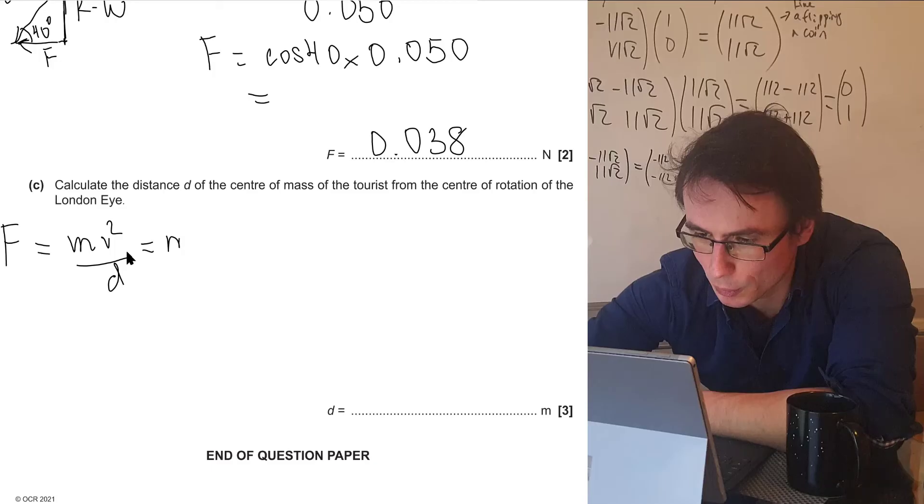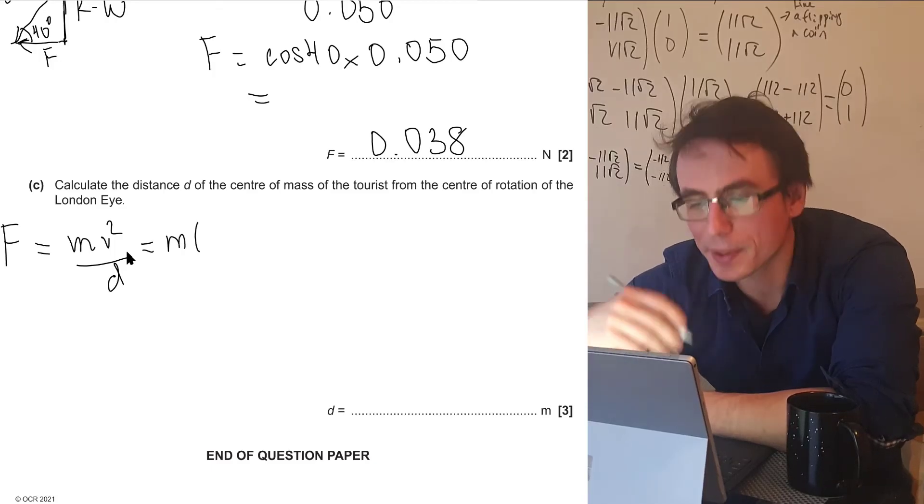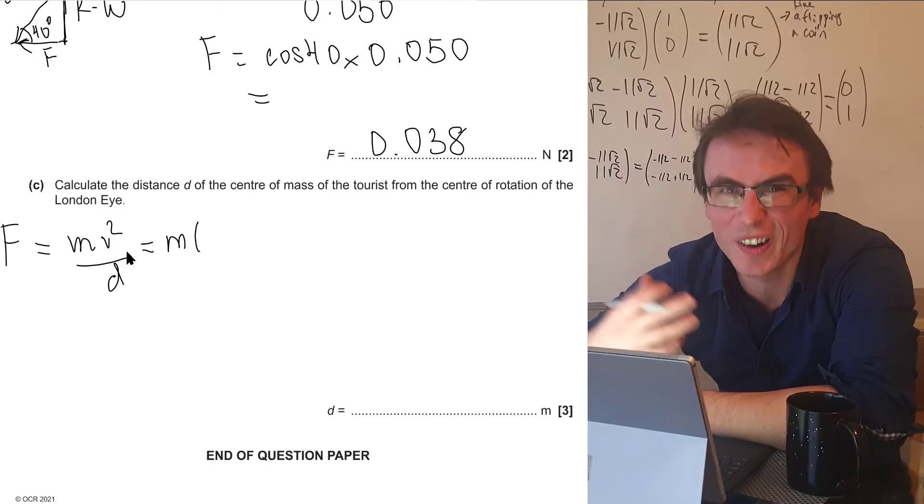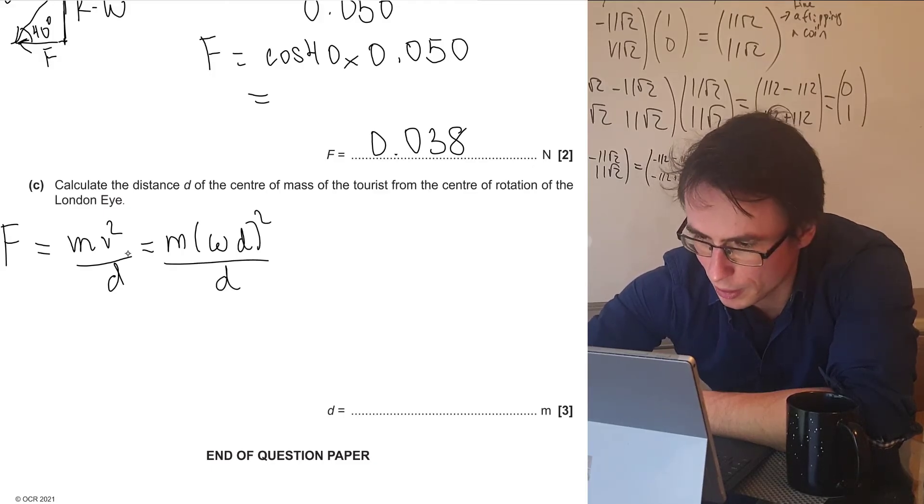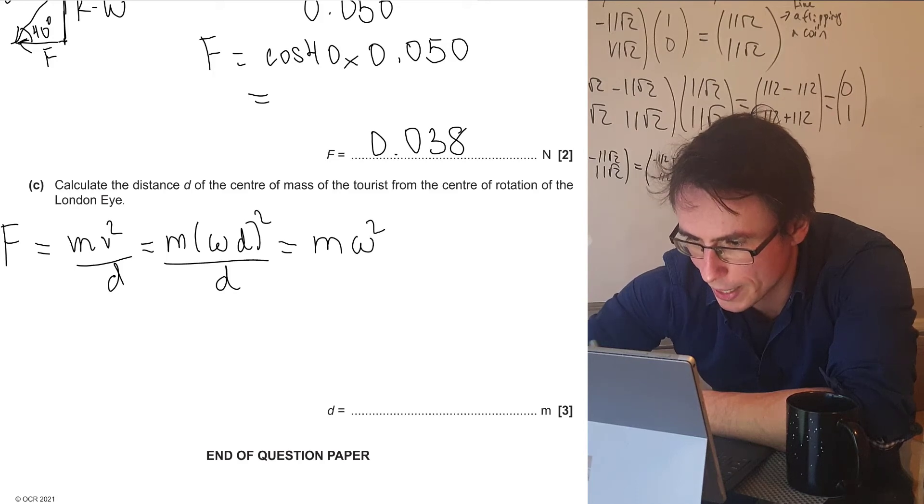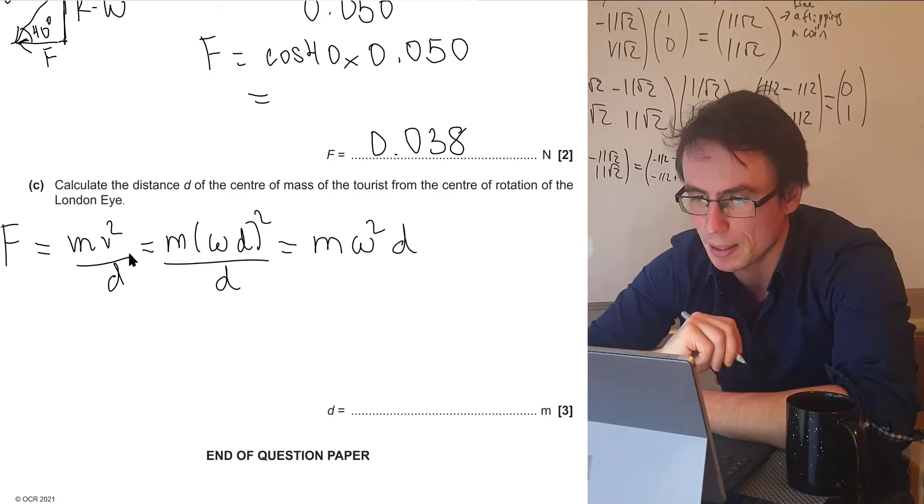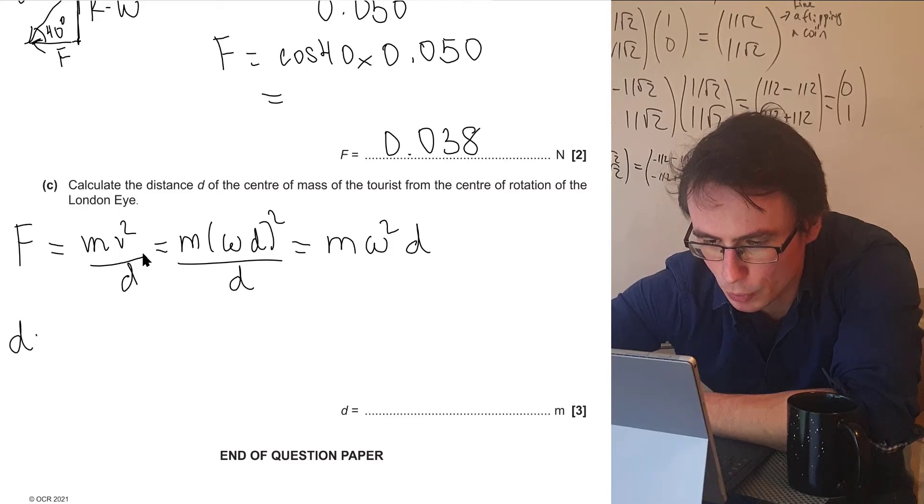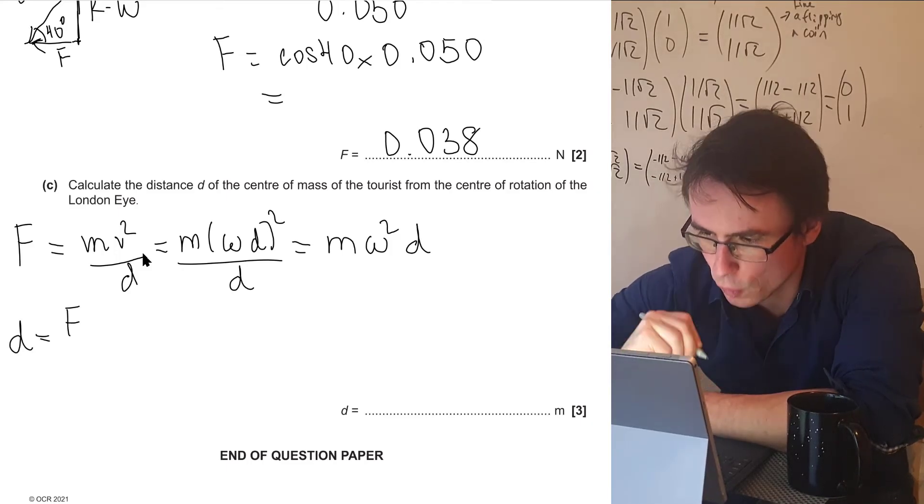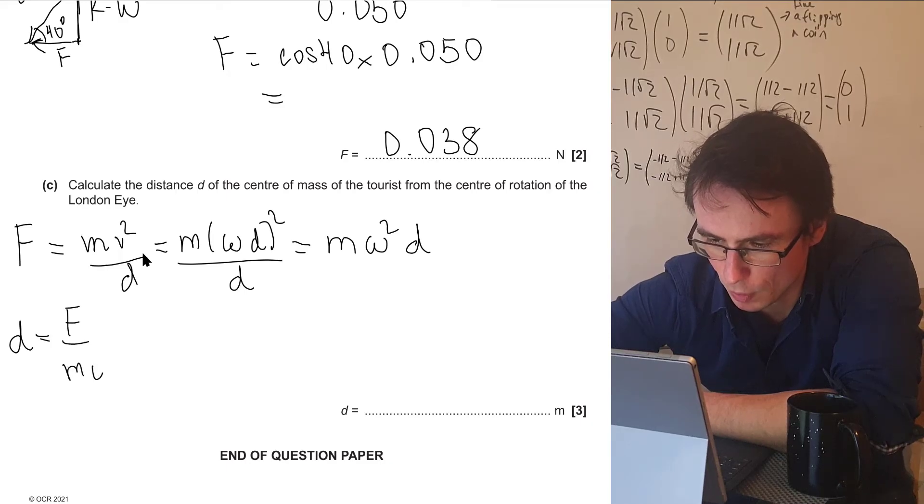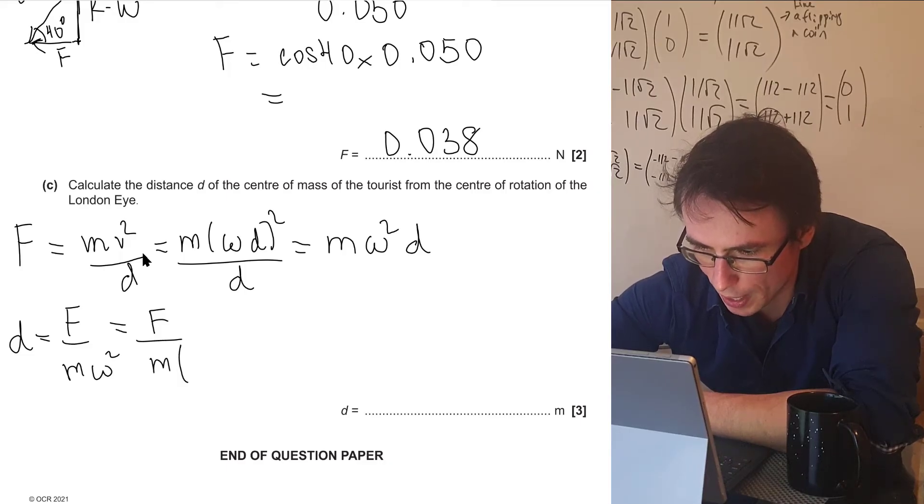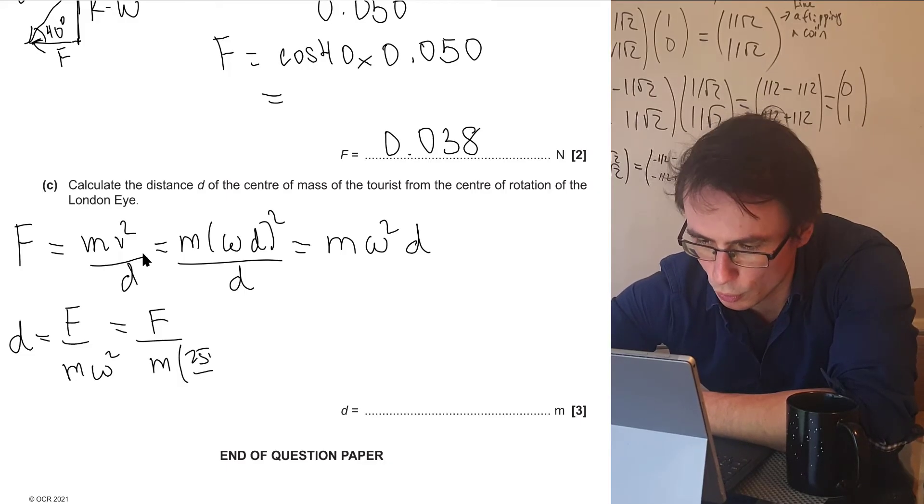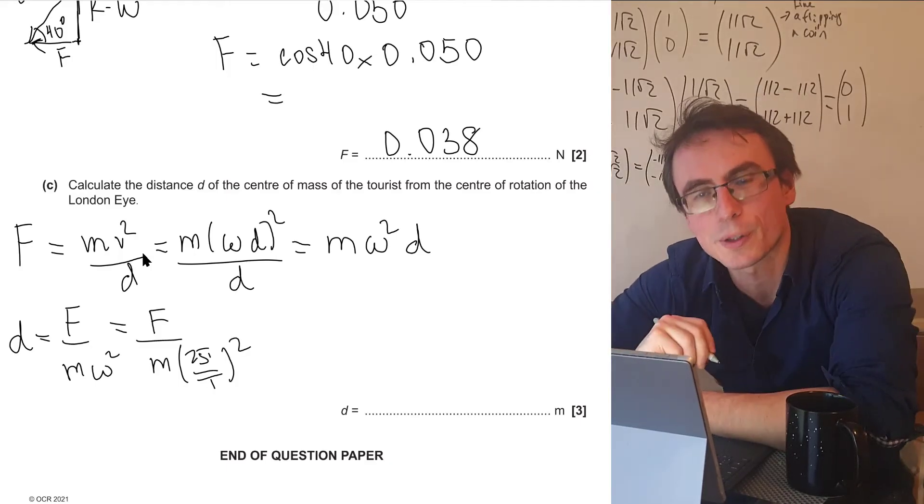In fact, we can say that the force will be equal to the mass times, now V is omega R. And in this case, R is just called D. So we can say that this is the angular velocity multiplied by D squared divided by D. So this will be equal to M omega squared times D. In other words, D will just be equal to the force divided by M omega squared, which is equal to the force divided by the mass. And omega squared is just going to be 2 pi over the time period, all of it squared.